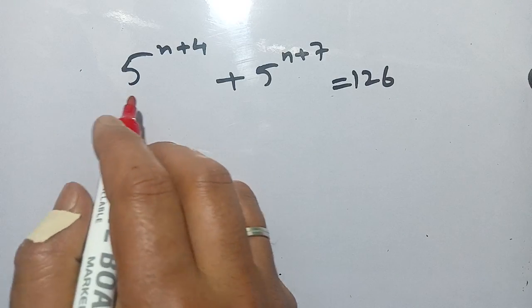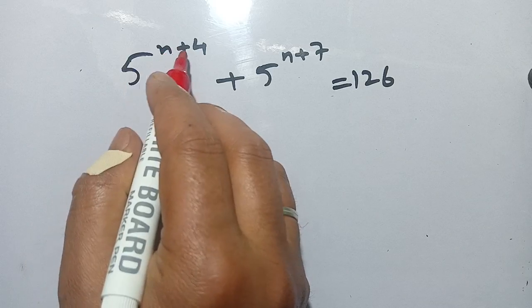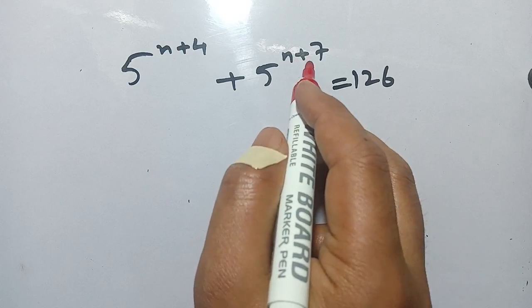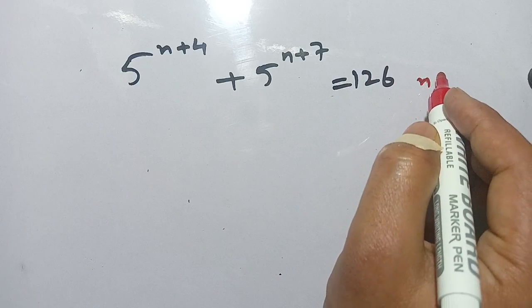Hello everyone, in today's class we are going to solve this exponential equation: 5 power n plus 4 plus 5 power n plus 7 is equal to 126, and we have to find the value of n.